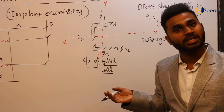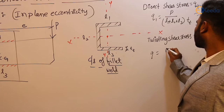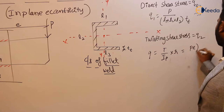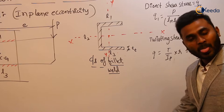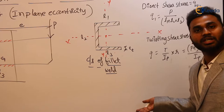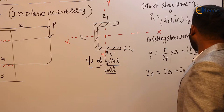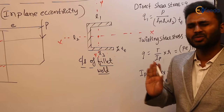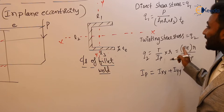For twisting shear stress q2, use the formula from pure torsion: τ = T × r / Ip, so q2 = (P × e × r) / Ip, where T = Pe is the twisting moment. Ip is the polar moment of inertia, found using the perpendicular axis theorem: Ip = Ixx + Iyy. First calculate Ixx and Iyy of the cross-section and add them. This calculation is very lengthy, which is why this topic is less emphasized. In this way, q2 is calculated.